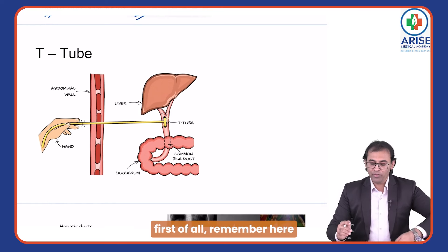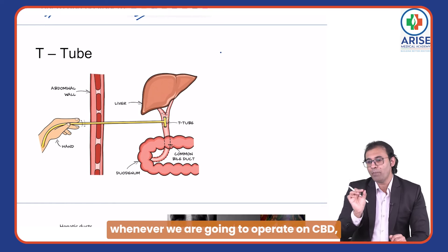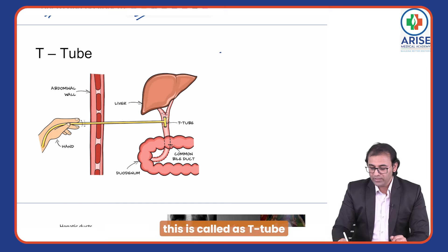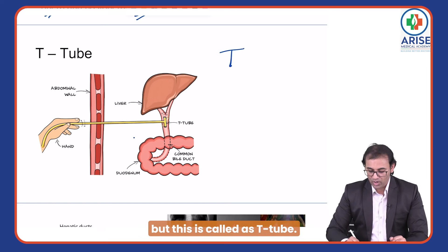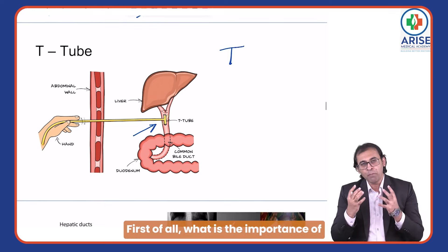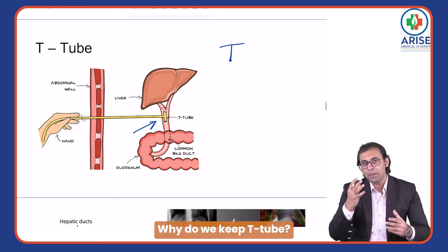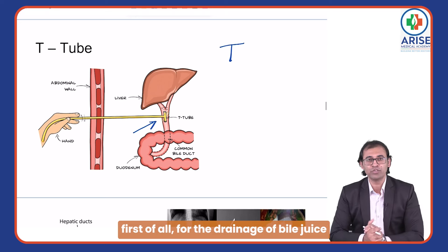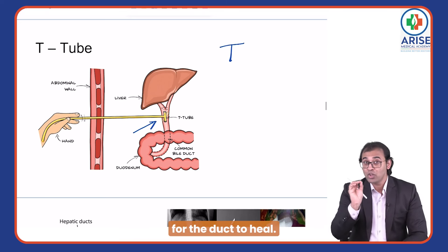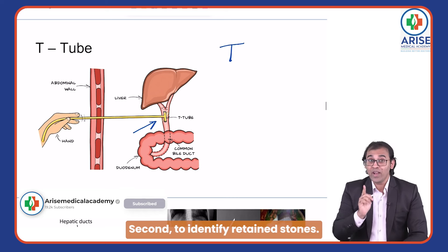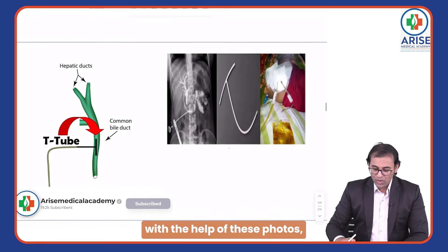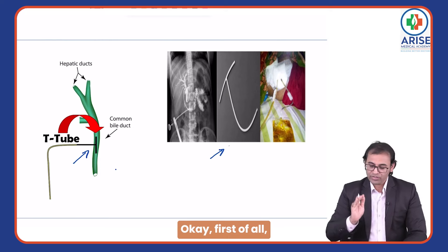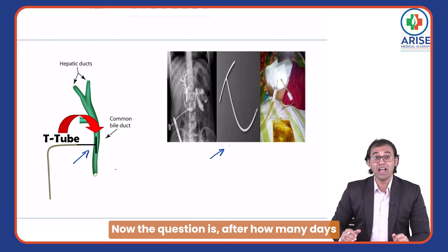Whenever we operate on the CBD or biliary tree, we fix a tube called a T-tube. The main functions of the T-tube are: first, drainage of bile juice to allow enough time for the duct to heal; second, to identify retained stones.